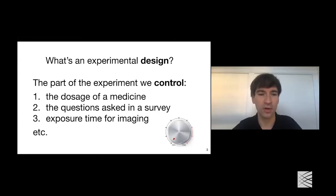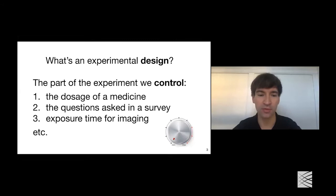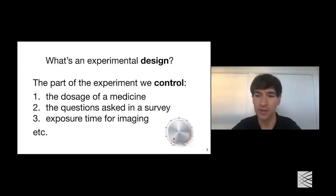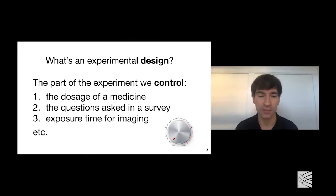What do I mean by an experimental design? By design, I mean the part of the experiment that you control. For example, if you're giving a patient medicine, you control the dosage. If you're asking participants questions in a survey, you control which questions and how many. If you're doing some imaging experiment, you might control the exposure time. Schematically, you might think of this as a knob on your experiment that you get to set. The crucial word here is control — you choose which questions get asked in the survey, but the responses will be dictated by the participant, not by you.